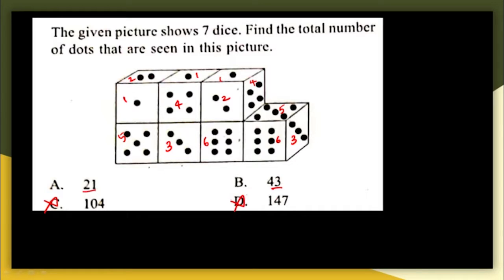To check whether it is 21 or 43: starting to add — six plus six is 12, plus 5 is 17, plus 3 is 20, plus 1 is 21. But I've only added some of the dots and already reached 21, so when I add all the remaining numbers the total will definitely be greater than 21. So option A is also eliminated.